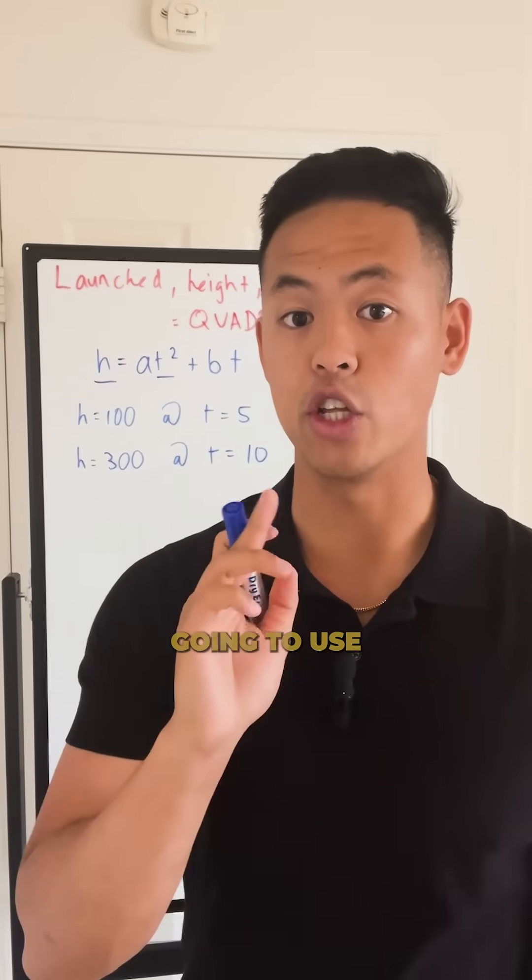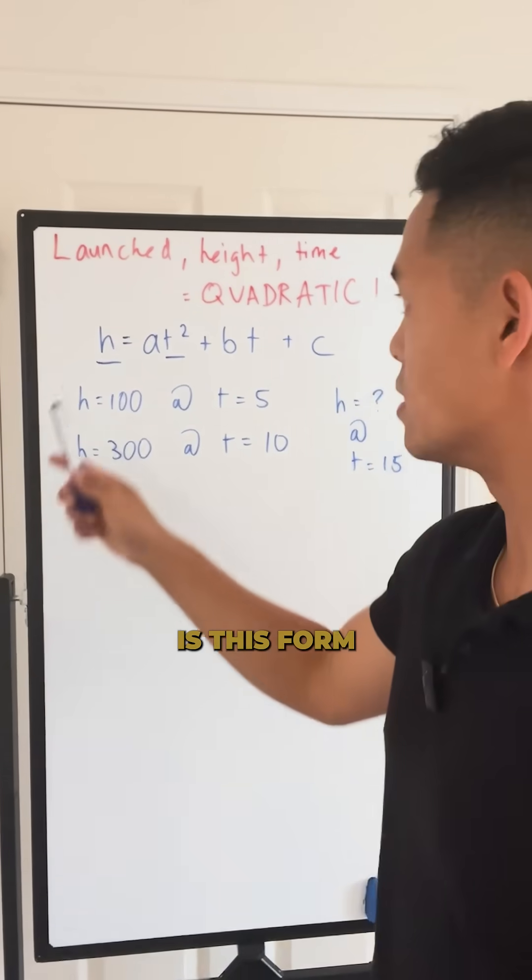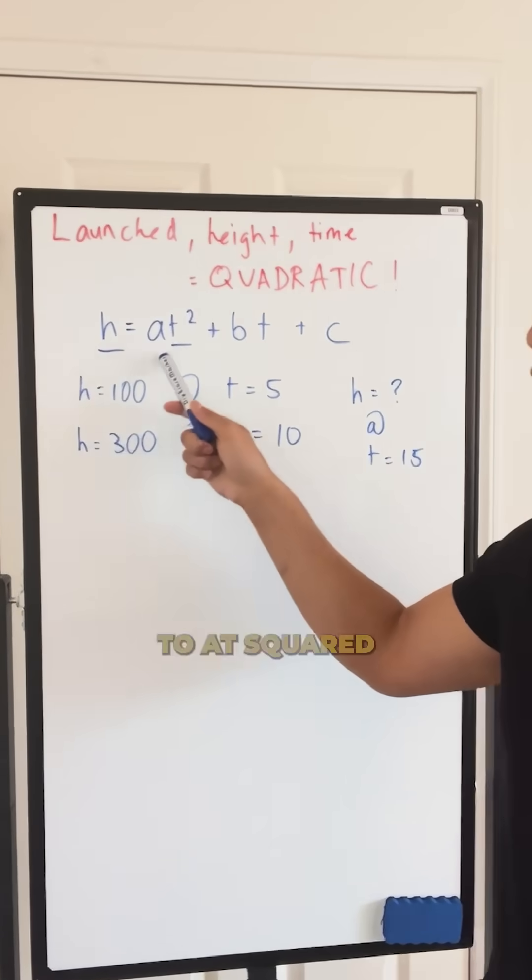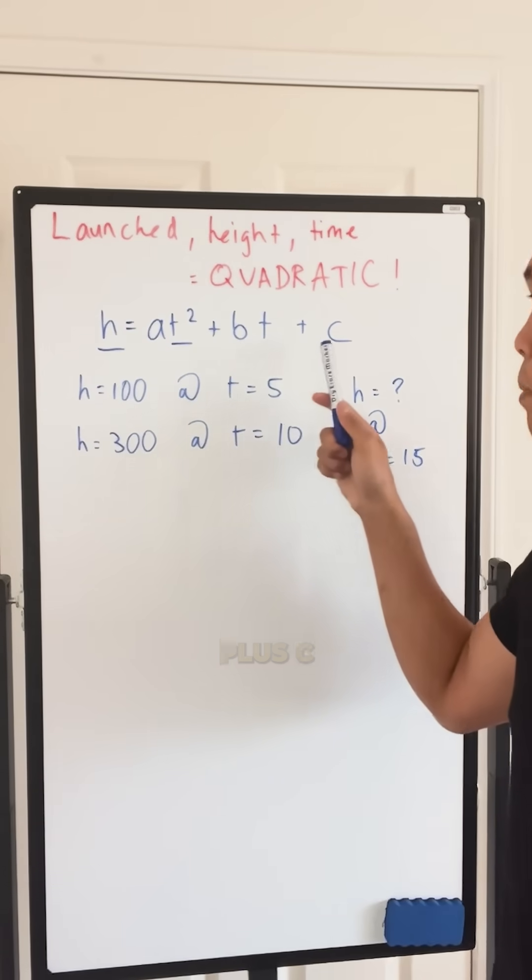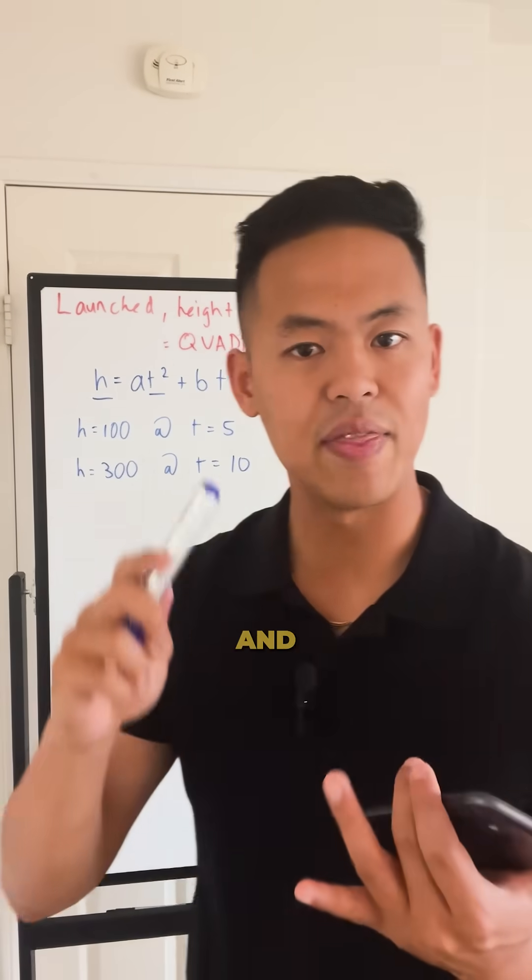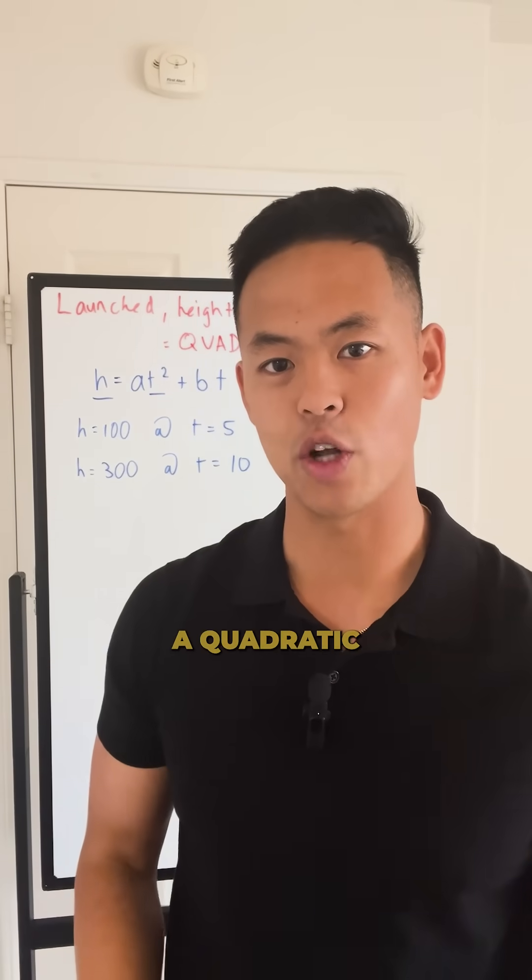The form of the quadratic you're going to use for this specific problem is H equals AT squared plus BT plus C, because they give us the height and the time, and we know it's a quadratic formula.